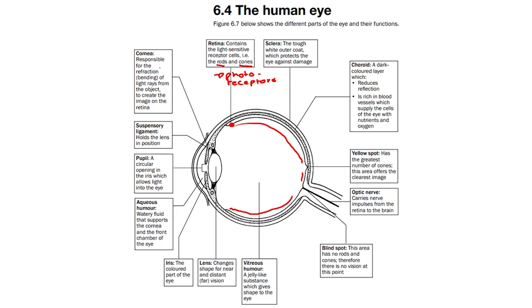Then we have the cornea, which is this part over here. The cornea is responsible for the refraction, which is the bending of light rays, from the object to create an image on the retina. It therefore allows the light rays to be bent so that they reach the retina at the back of the eye.